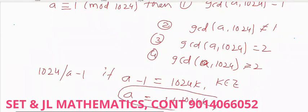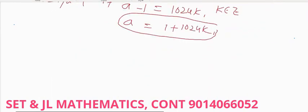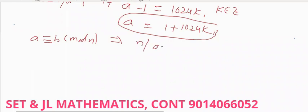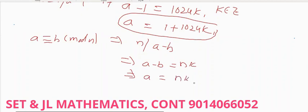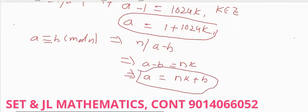A is equal to 1 plus 1024 times K. Now, what is the meaning of A minus B equal to NK? A is equal to NK plus B, which is in the form of A equal to BQ plus R — the quotient remainder form.